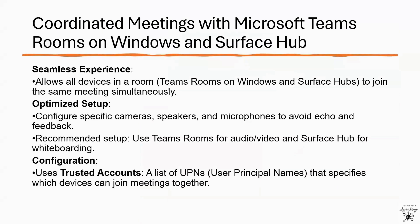When you have one or more MTRs on Windows or Surface Hubs in the same room, you can set up coordinated meetings for a remote, seamless experience. This feature enables all devices in a meeting room to join the same meeting when a user joins on one device. You can configure which cameras, speakers, and microphones should be used to ensure the best experience for participants, avoiding echo and feedback noise. It's highly recommended to use the audio-video devices from the MTR on Windows and use the Surface Hub for whiteboarding. The configuration uses trusted accounts — a list of UPNs for each Teams Room device or Surface Hub that the device should accept meeting join requests from.